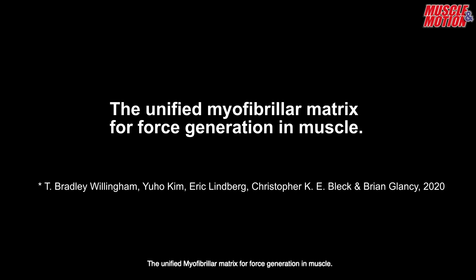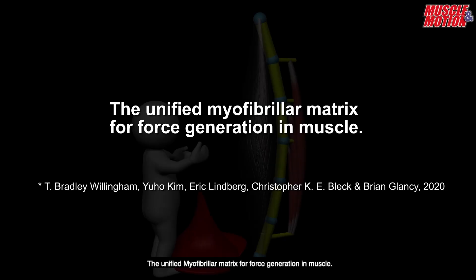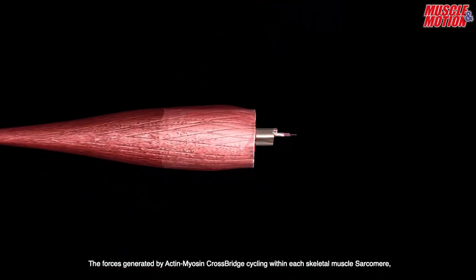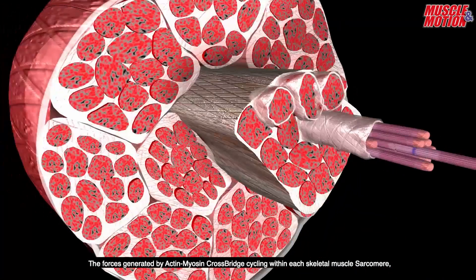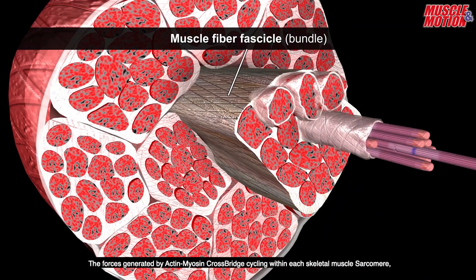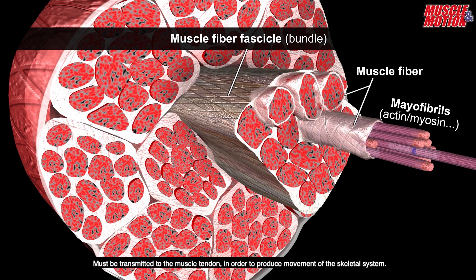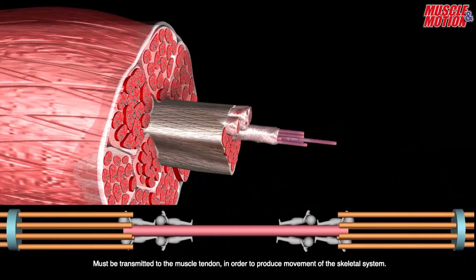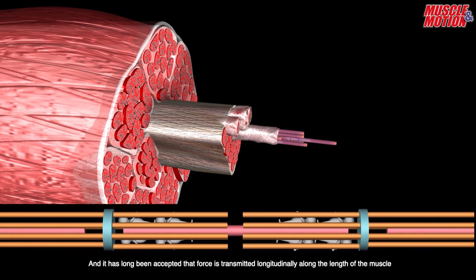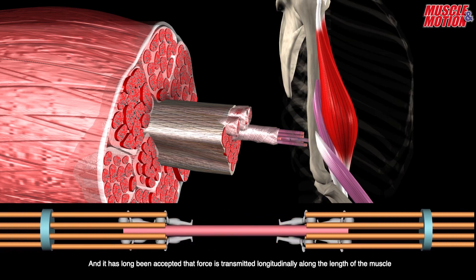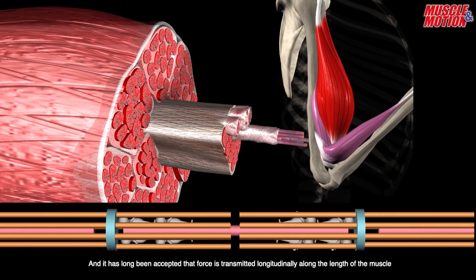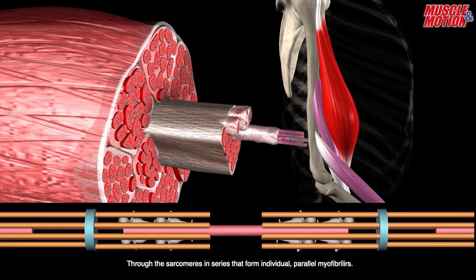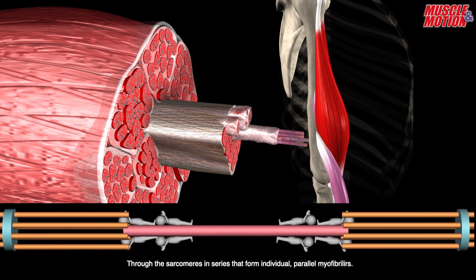The Unified Myofibrillar Matrix for Force Generation in Muscle. The forces generated by actin-myosin crossbridge cycling within each skeletal muscle sarcomere must be transmitted to the muscle tendon in order to produce movement of the skeletal system. It has long been accepted that force is transmitted longitudinally along the length of the muscle through the sarcomeres in series that form individual parallel myofibrils.